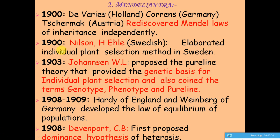After 1900, Nilsson-Ehle, a Swedish scientist, developed the individual plant selection method in Sweden. This method became a foundational technique for plant breeding, allowing breeders to select and propagate plants based on their individual genetic merit.